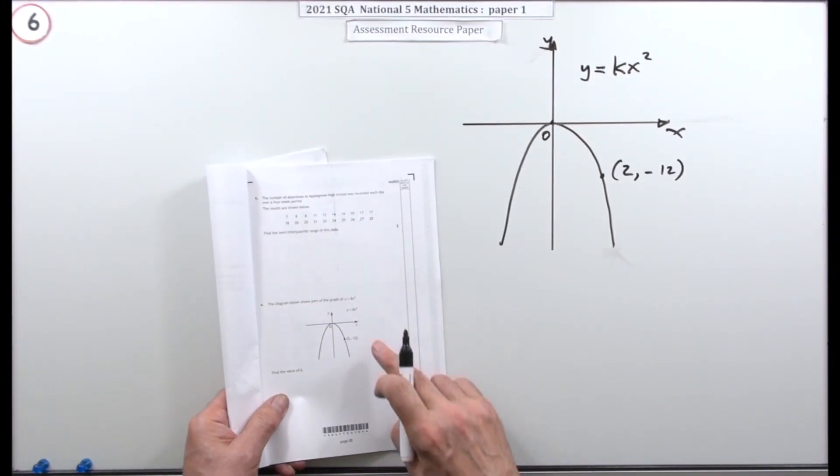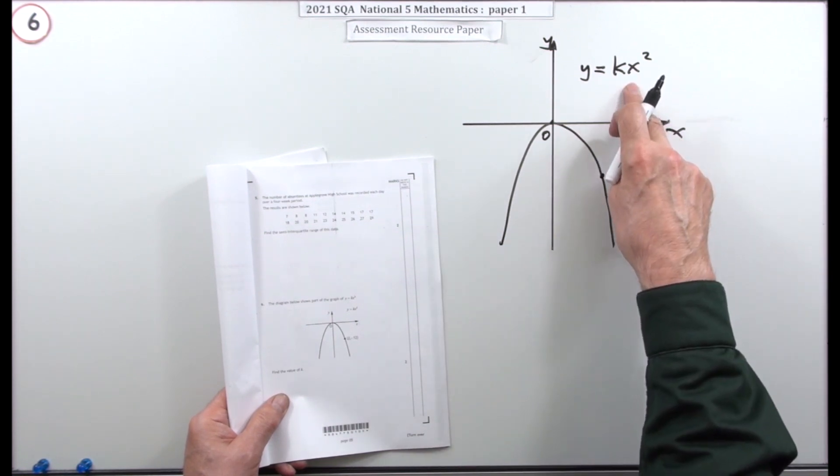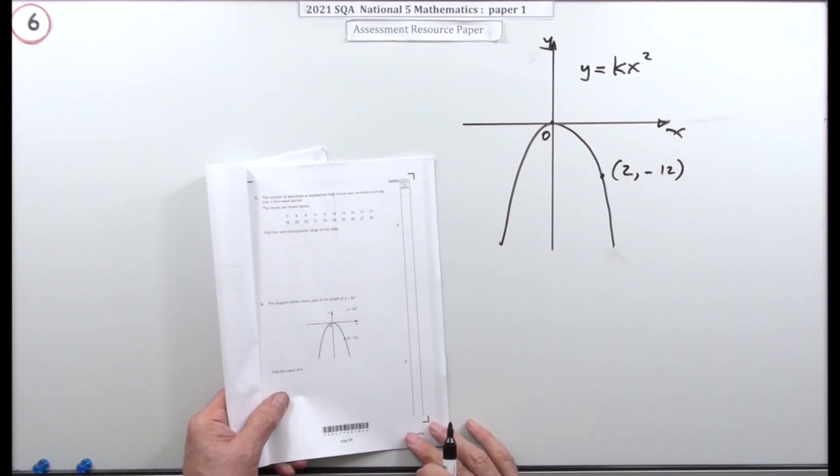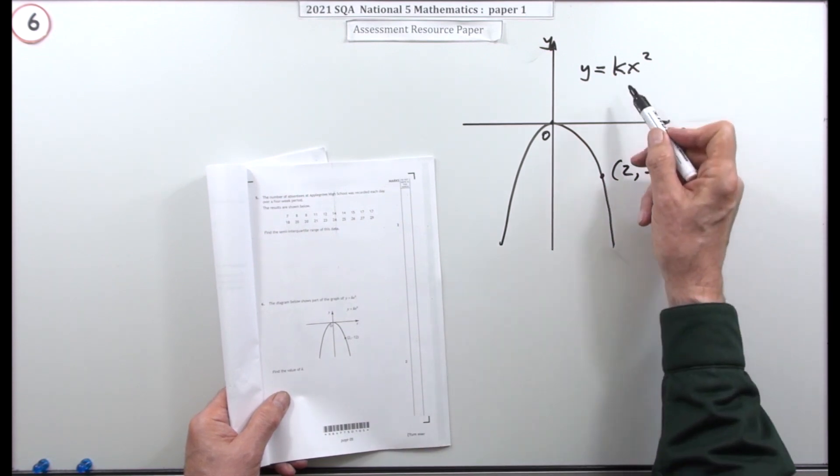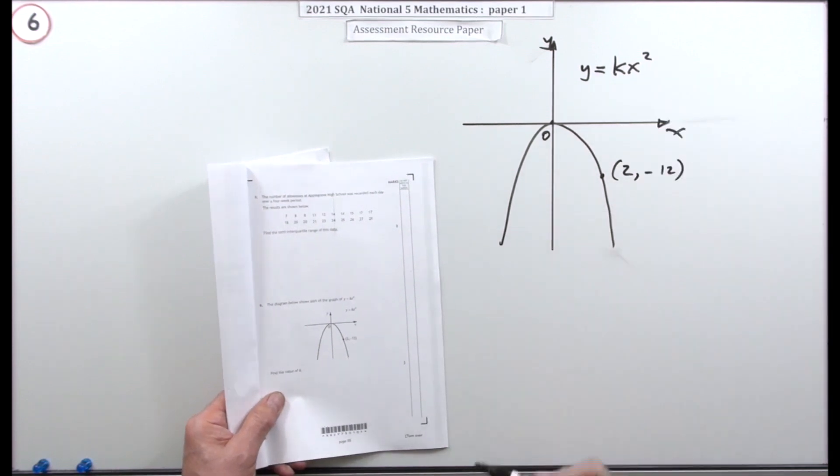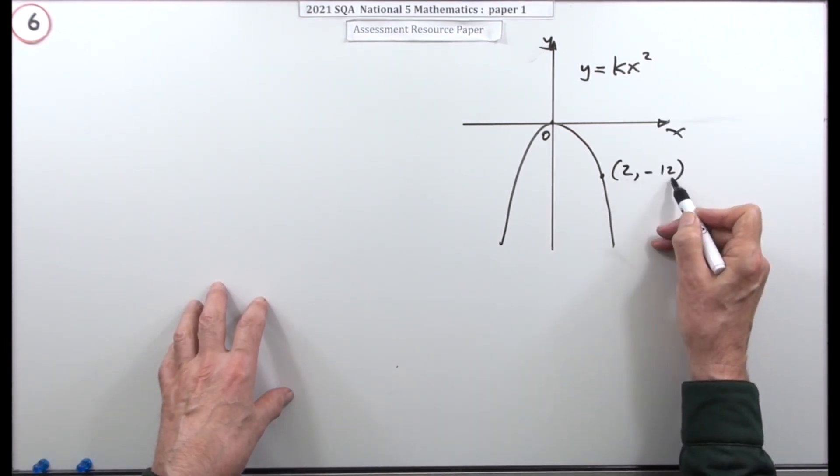Question six: this diagram shows part of the graph of y equals kx squared, so that's a parabola passing through the origin. It gives you a point on it, the point (2, -12), and it says, what is the value of k, the coefficient of x squared?